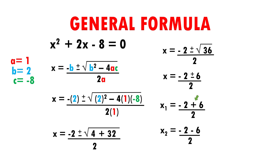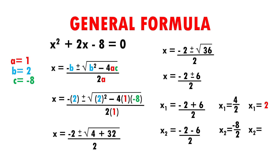In x1 we use the plus sign, and in x2 we use the minus sign. Now let's find the values. X1 equals minus 2 plus 6, which is 4, over 2 — so x1 equals 4 divided by 2, which gives us 2. Now for x2: x2 equals minus 2 minus 6, which is minus 8, over 2 — so x2 equals minus 8 divided by 2, which equals minus 4. We are done; we found the values x1 equals 2 and x2 equals minus 4.